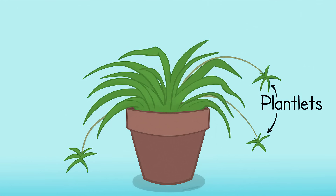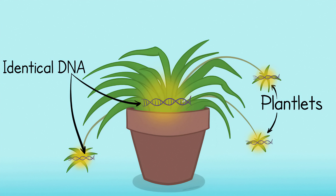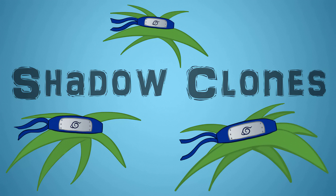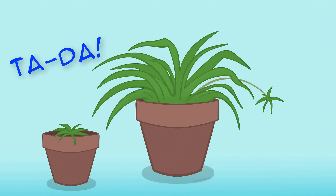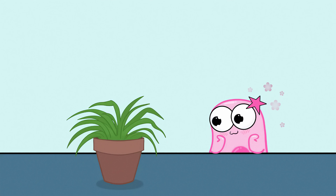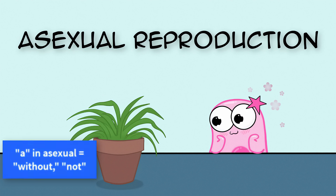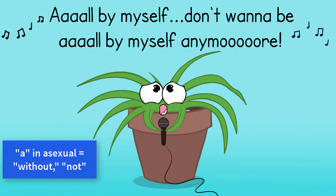Spider plants reproduce by making new, identical baby spider plantlets. The baby plants are genetically identical to the parent plant, meaning they contain the same DNA — a clone, basically. As a kid, I didn't realize that what I was seeing at the time was asexual reproduction. Asexual reproduction requires only one organism and results in offspring that are genetically identical.